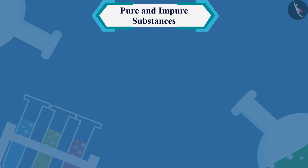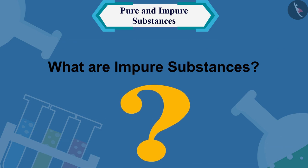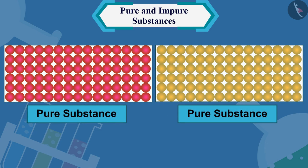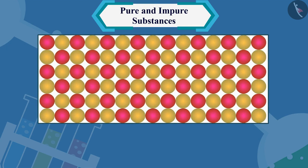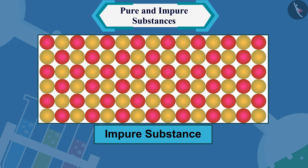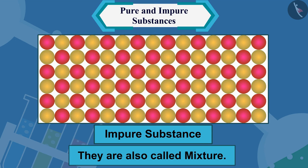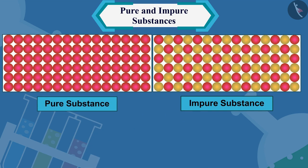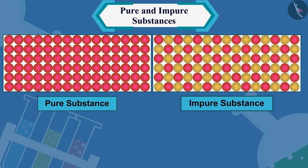So now you must be thinking — what are impure substances? The substances that are formed by mixing two or more pure ingredients are called impure substances. They are also called mixtures. Let us now learn more about pure and impure substances through some examples.